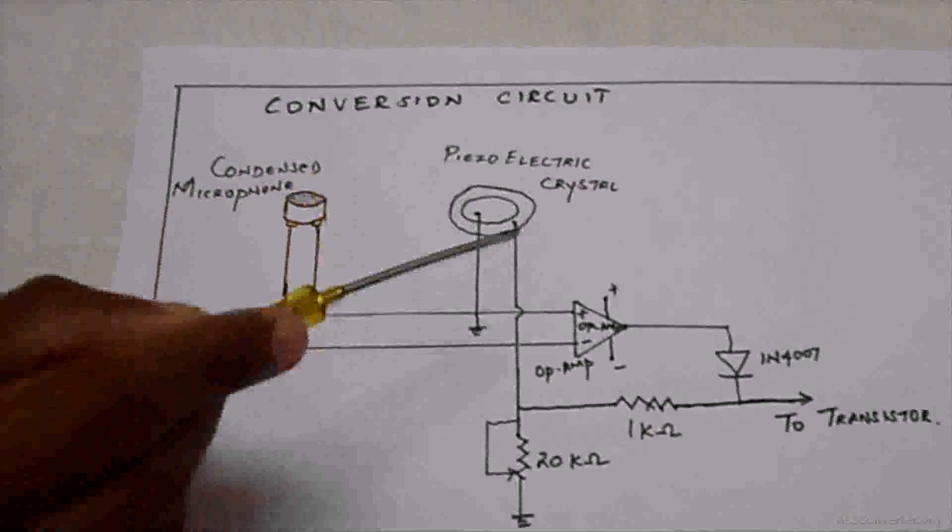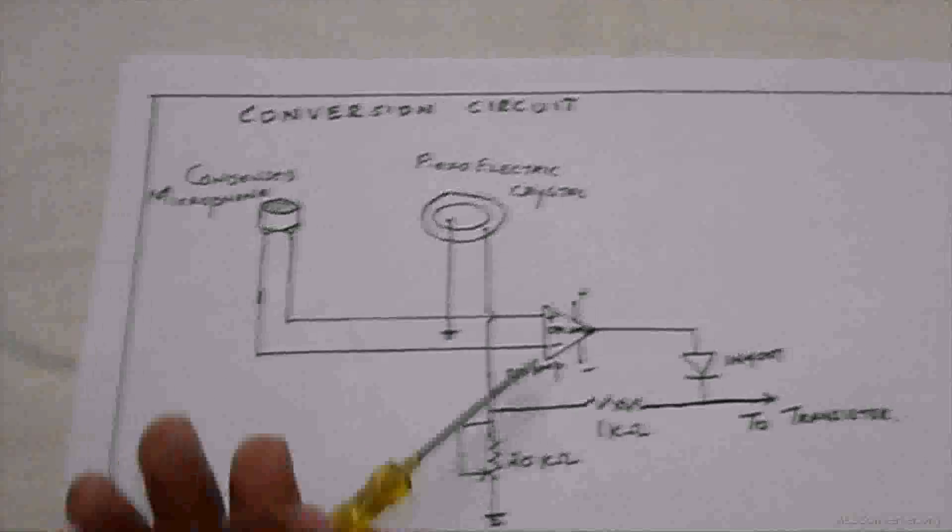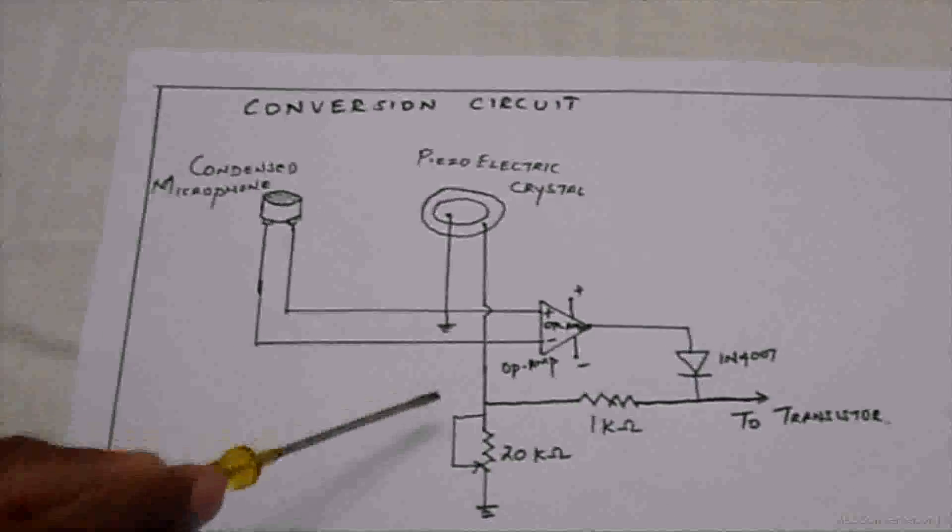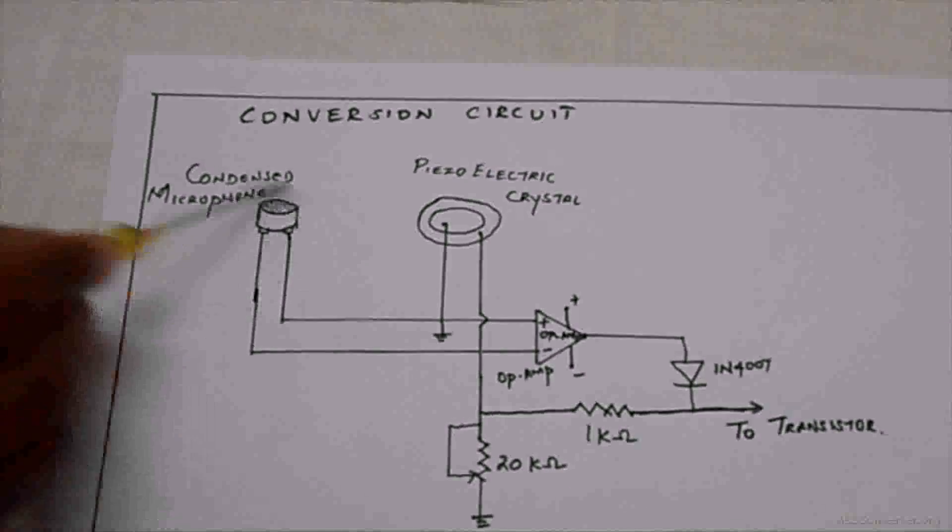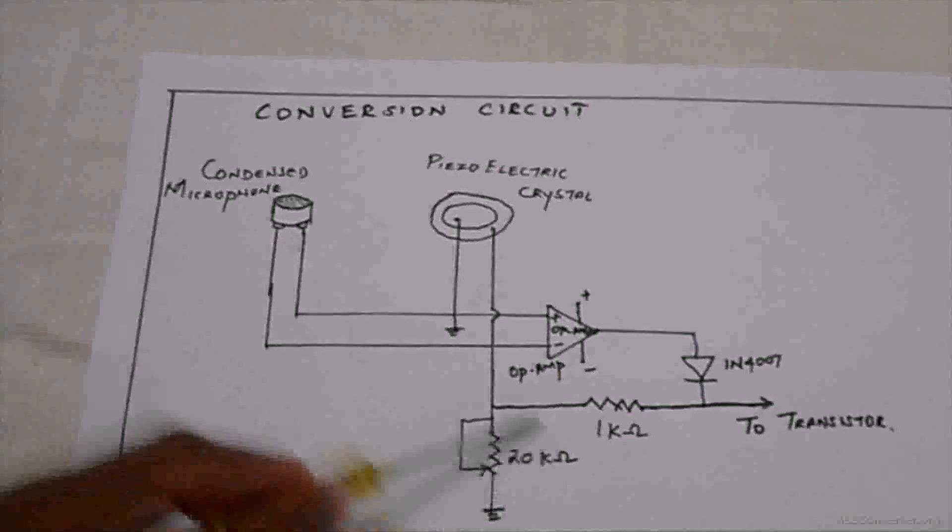The electrical energy is given to one end of the op-amp. For the other end, a feedback circuit gives the reference voltage for the negative terminal. The condensed microphone output is regulated by the tripod.